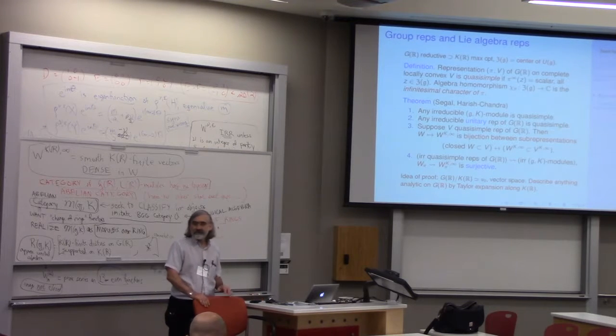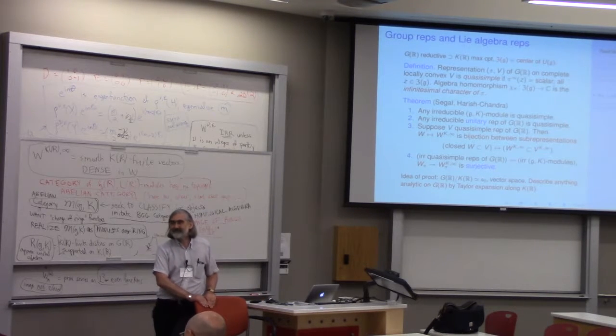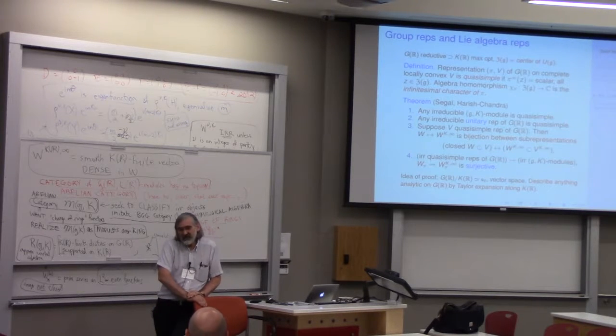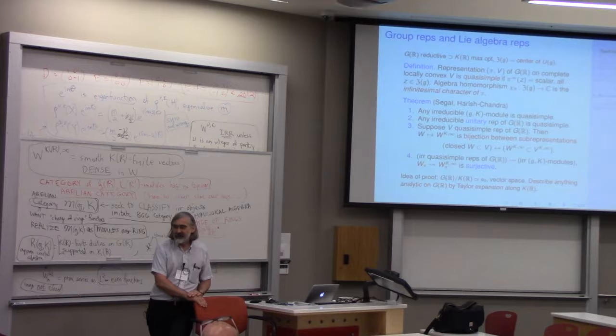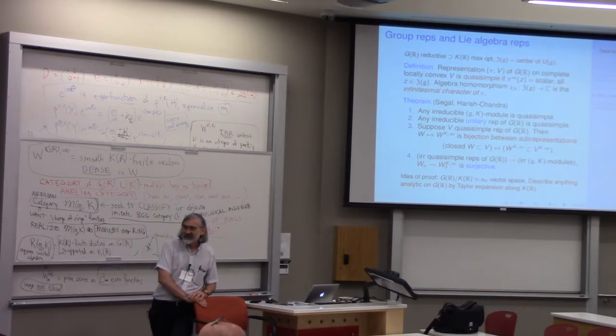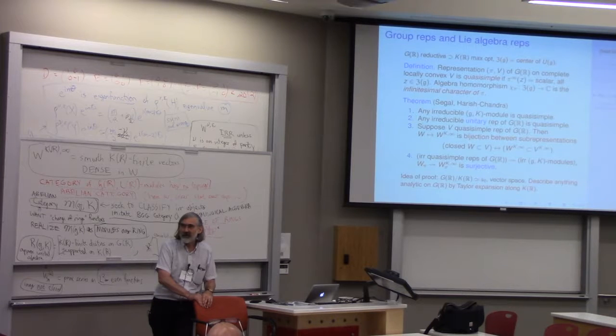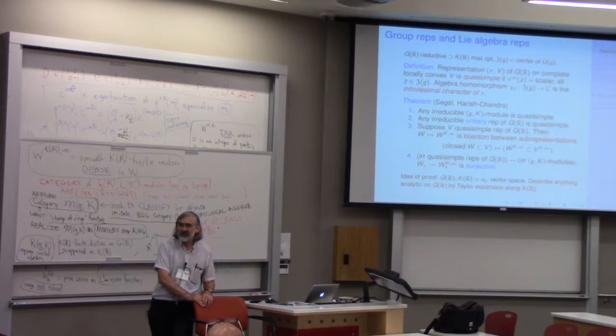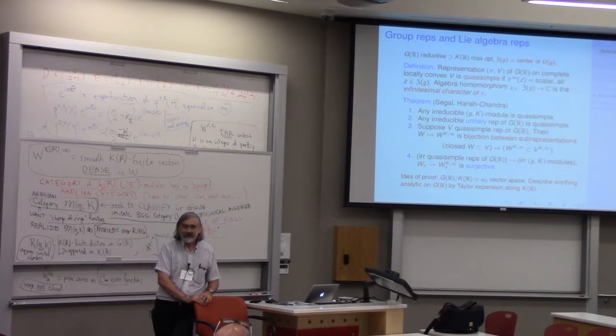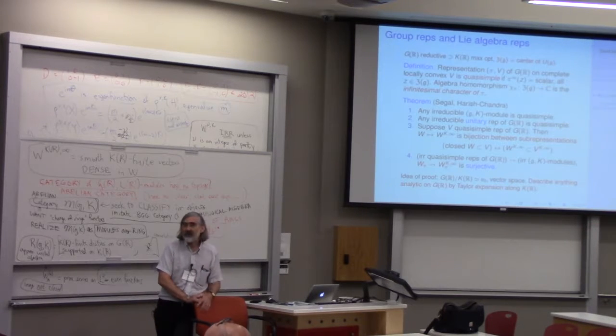I have a historical question. When did quasi-simple emerge as the fundamental notion? This is defined by Harish-Chandra in his early papers, representations of semi-simple Lie group on a Banach space, something like that. The definition is there. 1954 sounds about right.